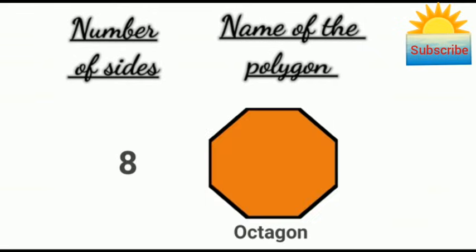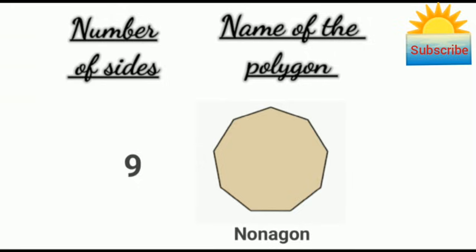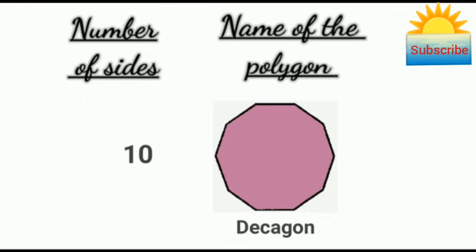A polygon of eight sides is called an octagon. A polygon of nine sides is called a nonagon. A polygon of ten sides is called a decagon.